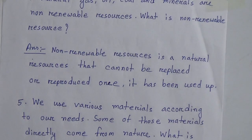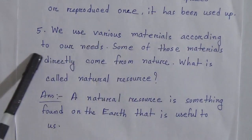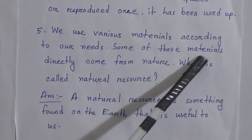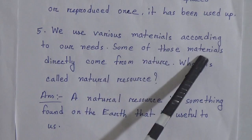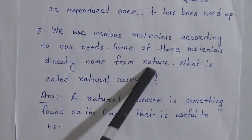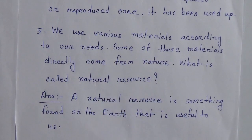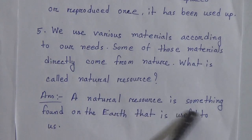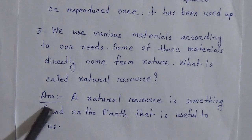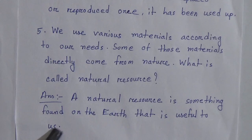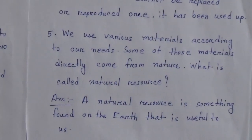Now this is the last short question of this chapter. Number 5: We use various materials according to our needs. Some of these materials directly come from nature. What is a natural resource? Answer: A natural resource is something found on the earth that is useful to us.